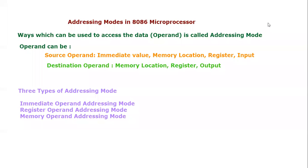In this video tutorial we are going to explore a new topic in 8086 microprocessor, and that is addressing mode. Addressing mode can be defined as the ways which can be used to access the data or operand in a microprocessor, microcontroller, or embedded system.